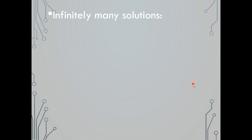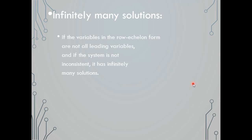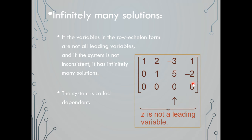For infinitely many solutions: if the variables in row echelon form are not all leading variables, and the system is not inconsistent, then it has infinitely many solutions. This system is called dependent. Using Gaussian elimination, we'll have our diagonal of ones, and then row 3 has all zeros — giving the true statement 0 equals 0. When we see this scenario, the system has infinitely many solutions.